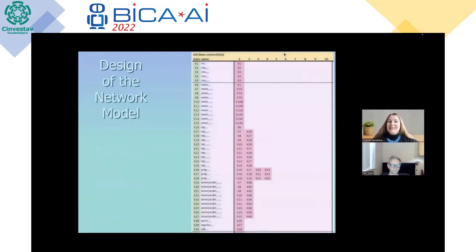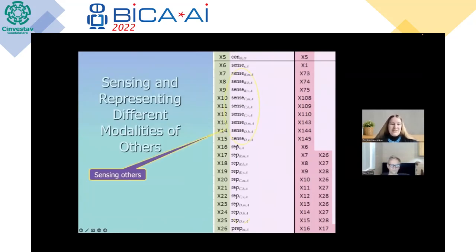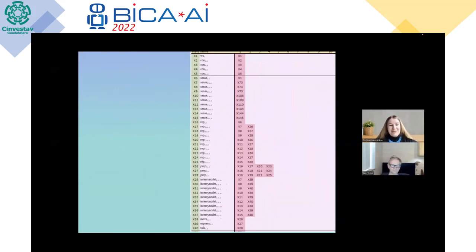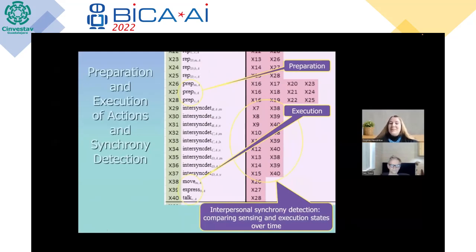Here you can see the base level of agent A as designed within our agent network model. We have sensing and representation states for different modalities of others — in this case for agents B, C, and D — with M for movement, B for effects, and V for verbal actions. Then we also have the base level of a single agent with preparation states, execution states, and synchrony detection states. The interpersonal synchrony detection happens by comparing the sensing states of the actions of another agent with the execution states of the agent itself over time.